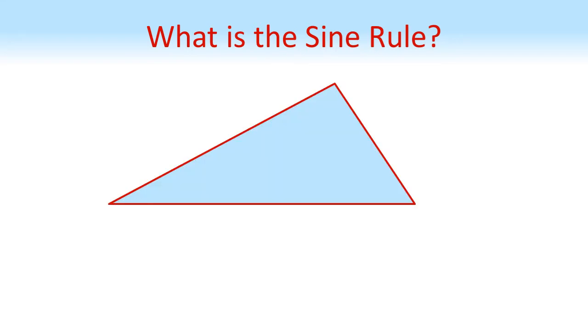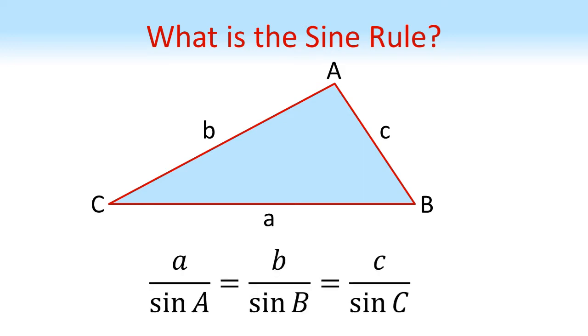So if we take any triangle, we're going to label the sides with lowercase letters a, b, and c and label the corners with uppercase letters A, B, and C such that capital A is opposite the lower a, capital B is opposite lower b, and capital C is opposite lower c. If we've got this, then the sine rule states that a over sine A equals b over sine B equals c over sine C.